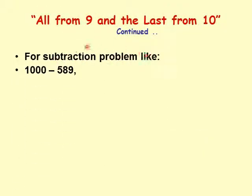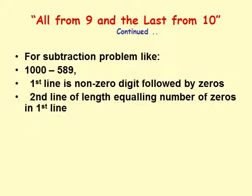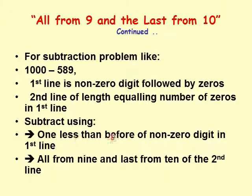Let's look at 1000 minus 589, which is the same type: a 1 followed by zeros, and the second line has non-zero digits with the same count as the zeros. In the thousands place we apply 'one less than before,' giving 0. Then we apply 'all from 9 and last from 10' to 589 to get 4, 1, and 1. So the answer is 411.